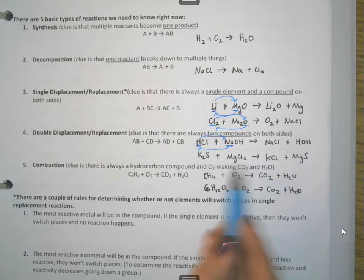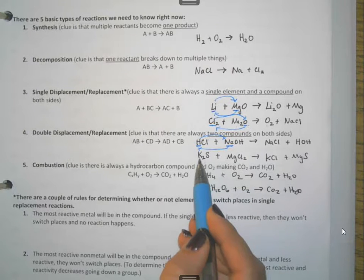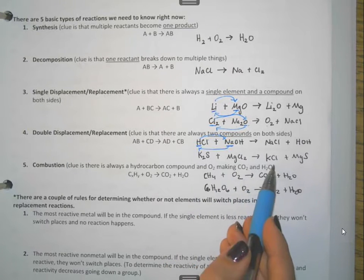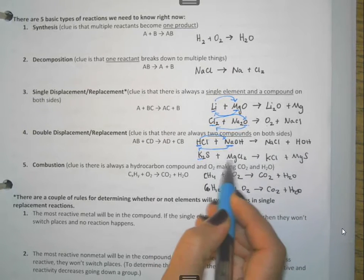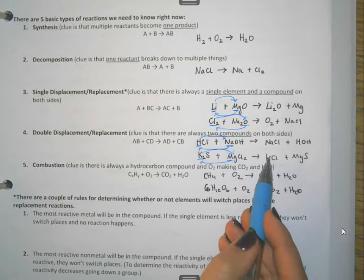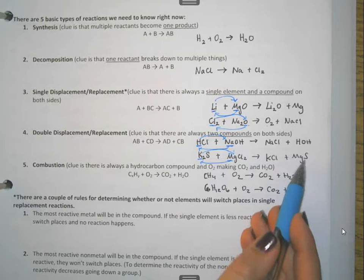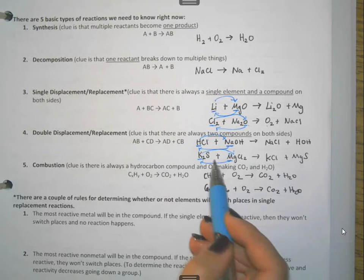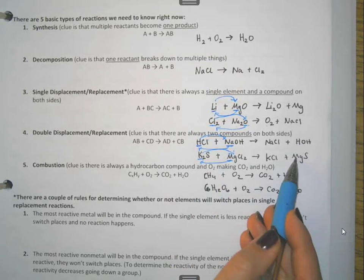Here's another example, same thing with it. I've got potassium sulfide and magnesium chloride going together. Well, the potassium and the magnesium, they just did a little switcheroo, so that potassium ended up with chlorine and magnesium ended up with sulfur. But I have two compounds making two new compounds.